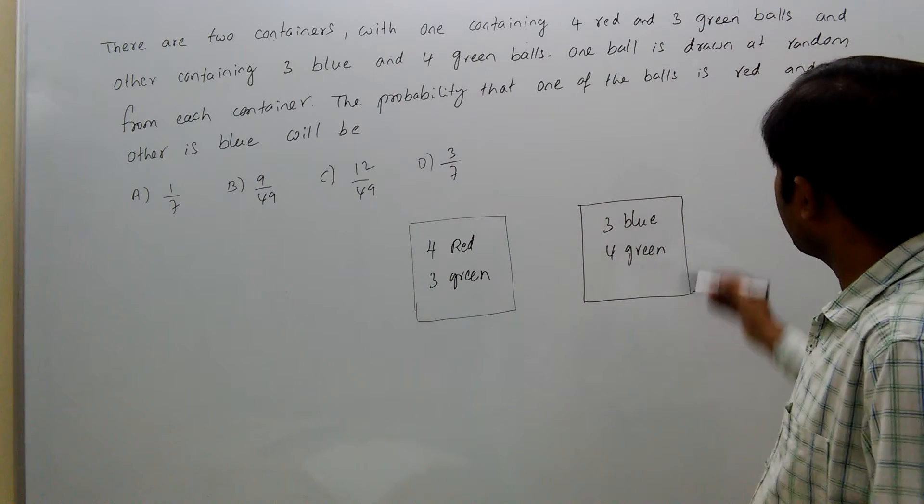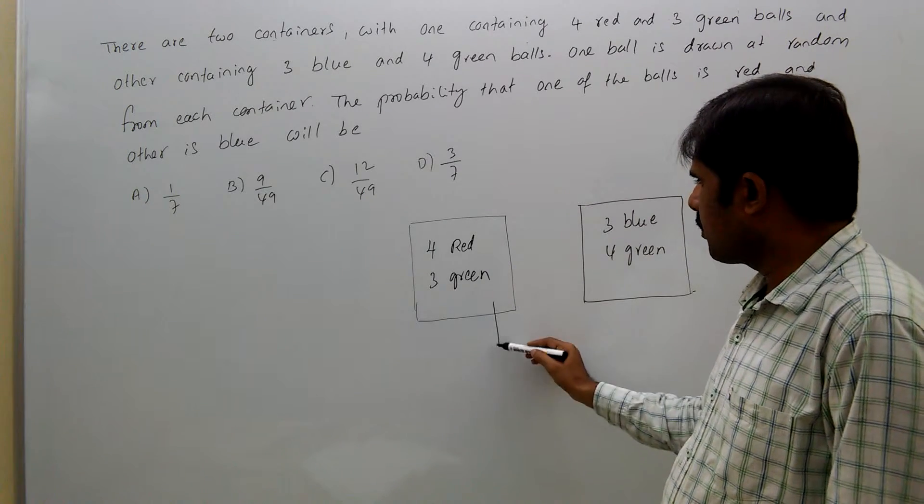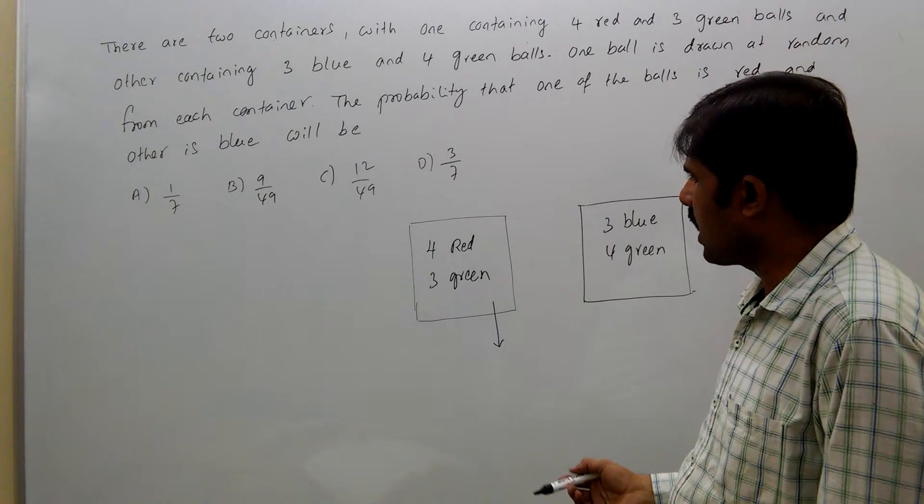Now we need the probability of getting one red and one blue, so if you draw from this one ball randomly.